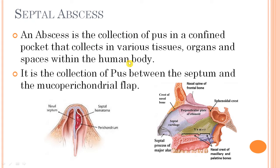The nasal septum was explained in the anatomy video previously, but briefly: it divides the nasal cavity into two halves. It is divided into the columellar septum, the membranous septum, and the septum proper. The columellar and membranous septums are covered by skin, while the septum proper is covered by mucous membrane. The septal cartilage is covered by the perichondrium, and when the perichondrium and the overlying mucous membrane combine, they form the mucoparichondrial membrane.